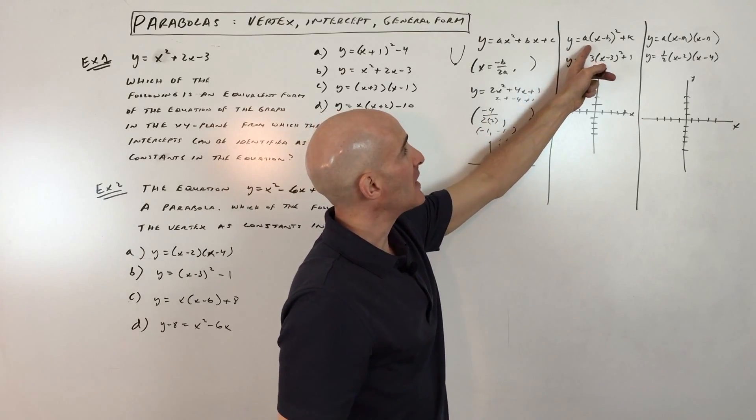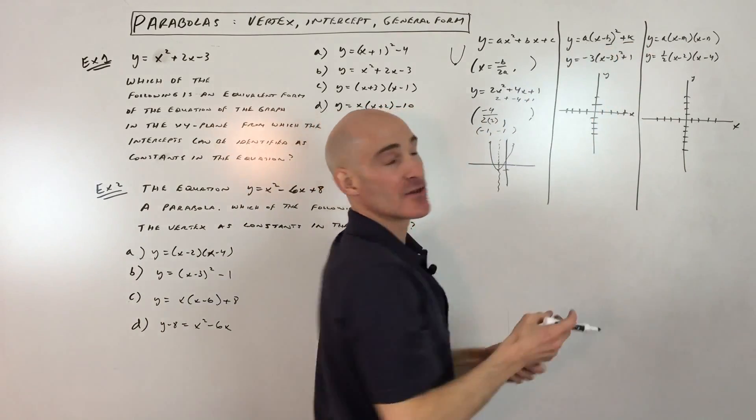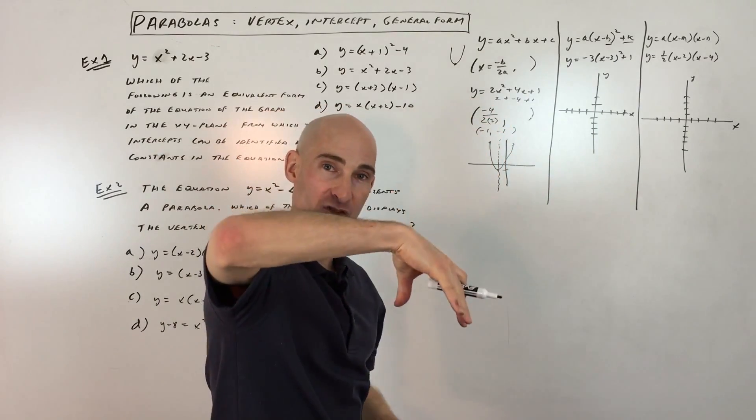So this one is in vertex form, and you can see the vertex is going to be at h,k, and then the a is the vertical stretch. If it's positive, it's going to open up. If it's negative, it's going to open down.